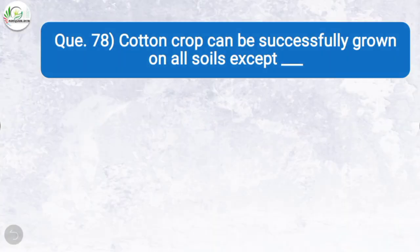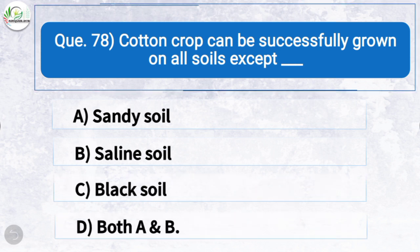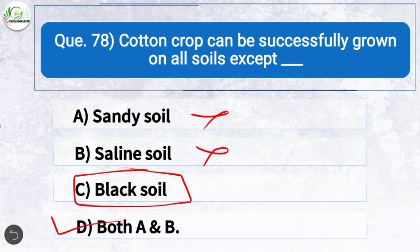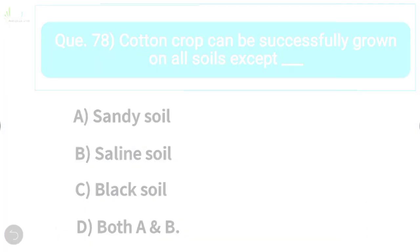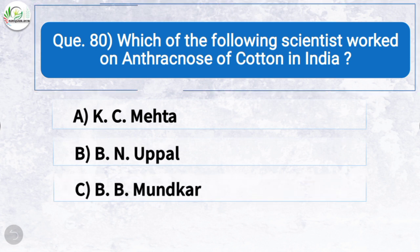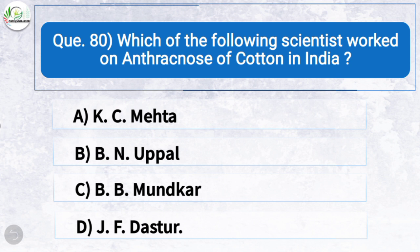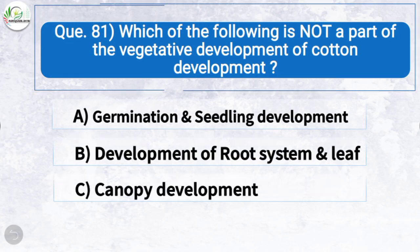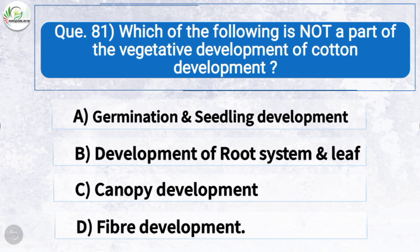Question seventy-eight: Cotton crop can be successfully grown on all soils except — the correct answer is option D: both sandy soil and saline soil. Question seventy-nine: Type of mouth part in red cotton bug is — the correct answer is option D: piercing and sucking. Question eighty: Which scientist worked on anthracnose of cotton in India? The correct answer is option D: J.F. Dastur. Question eighty-one: Which is not a part of vegetative development of cotton? The correct answer is option D: fiber development.